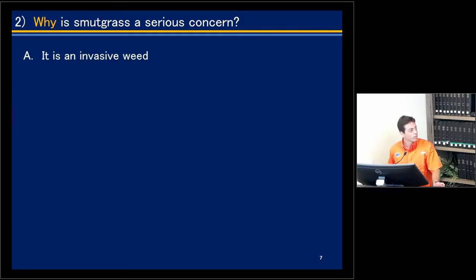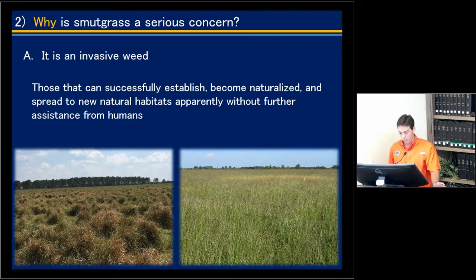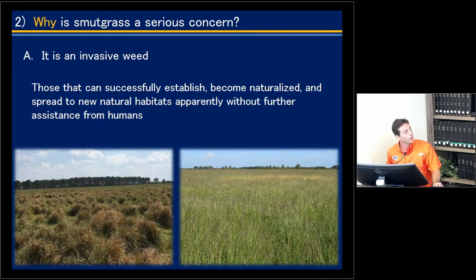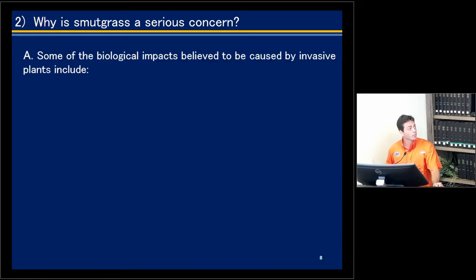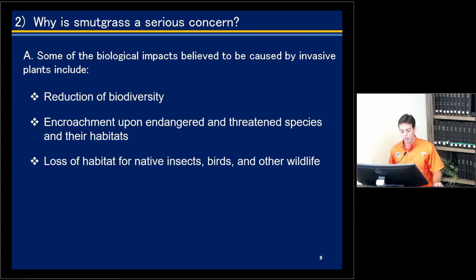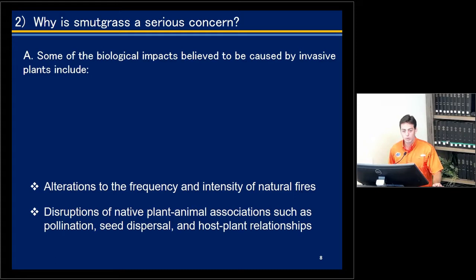Smudge grass is a problem first because it's an invasive plant. Invasive plants are those that can successfully establish, become naturalized, and spread to new natural habitats without further human assistance. Invasive weeds reduce biodiversity of natural ecosystems, can encroach upon endangered species habitats, cause loss of habitat for native insects, birds, and wildlife, alter fire frequency and intensity — which is especially true for smudge grass — and disrupt native plant-animal associations such as pollination and seed dispersal.